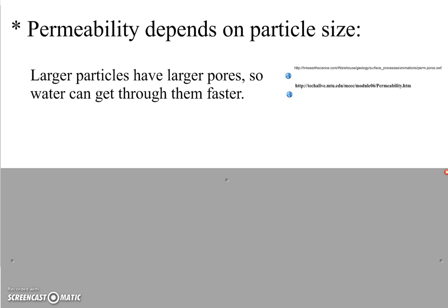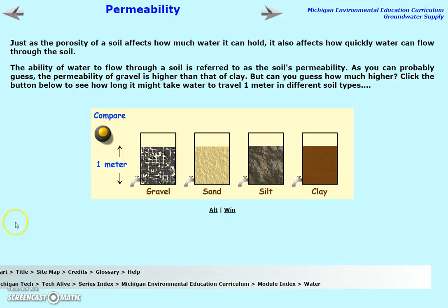If soil has larger particles, it means it has larger pores and water is able to get through them faster. If you think about this — if you're trying to walk through a room that is very crowded and there's not a lot of gaps between the people, it's going to take you longer to get through. If the room is fairly empty, with large gaps between the people, you're going to get through it significantly faster. We're going to look at a couple of animations to show this.